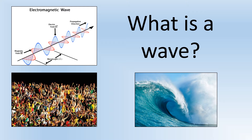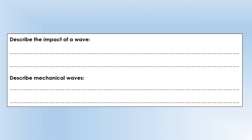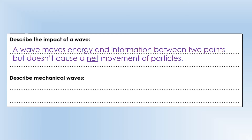To get an essence of what a wave is, we describe what a wave does. A wave moves energy and possibly also information between two points, but doesn't cause a net movement of particles. That doesn't mean waves don't move particles at all — some do — but once the wave has passed through, the particles will be back where they started. So essentially it's a way of moving energy and information between two points.